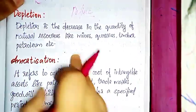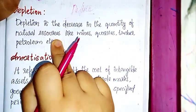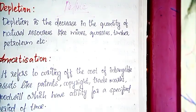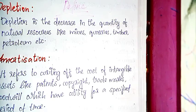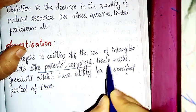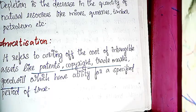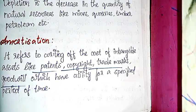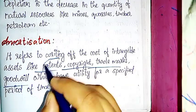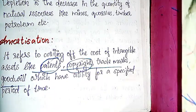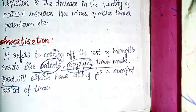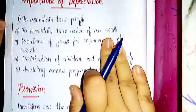Depletion refers to a decrease in the quantity of natural resources. Amortization refers to the writing off of intangible assets such as patents, copyrights, trademarks, and goodwill — which have utility over a specific period of time.